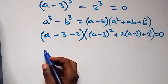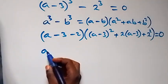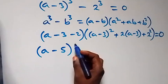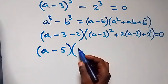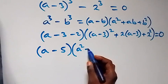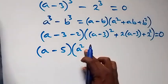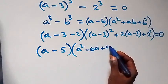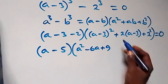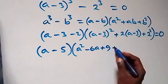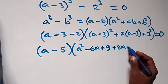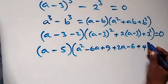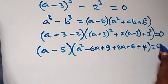When we expand here, we have (a minus 5) times [a squared minus 6a plus 9, plus 2a minus 6, plus 4] equals to 0. Collecting like terms inside the bracket: a squared, then minus 6a plus 2a gives minus 4a, then 9 minus 6 plus 4 gives 7. So we have (a minus 5) times (a squared minus 4a plus 7) equals to 0.